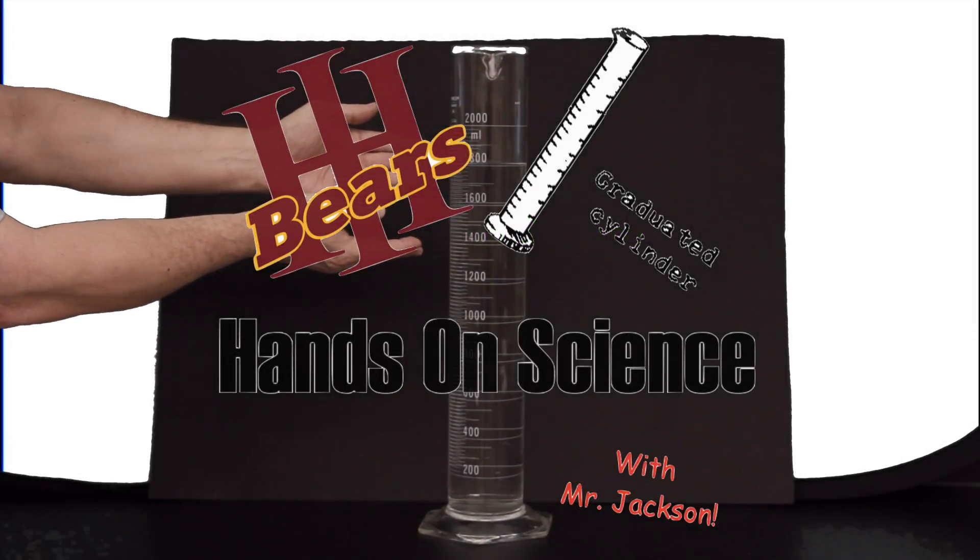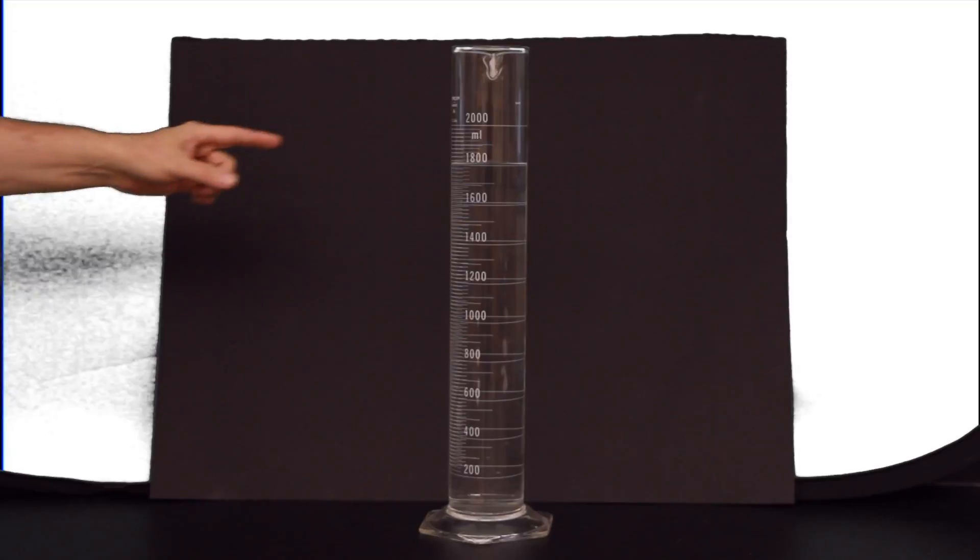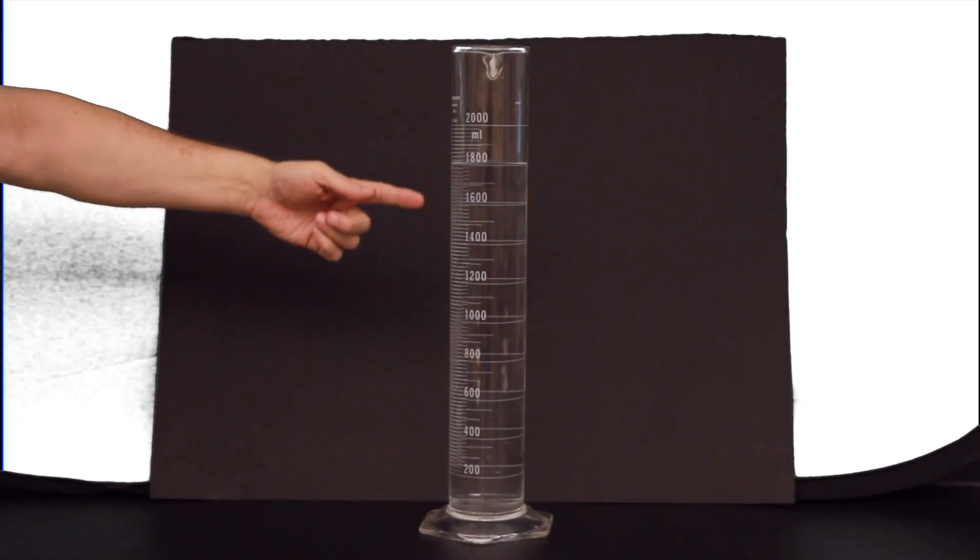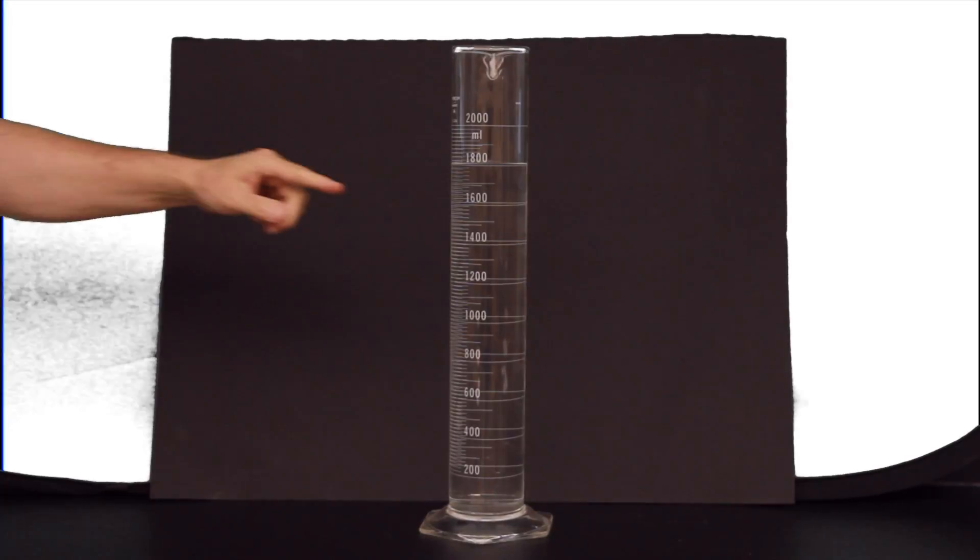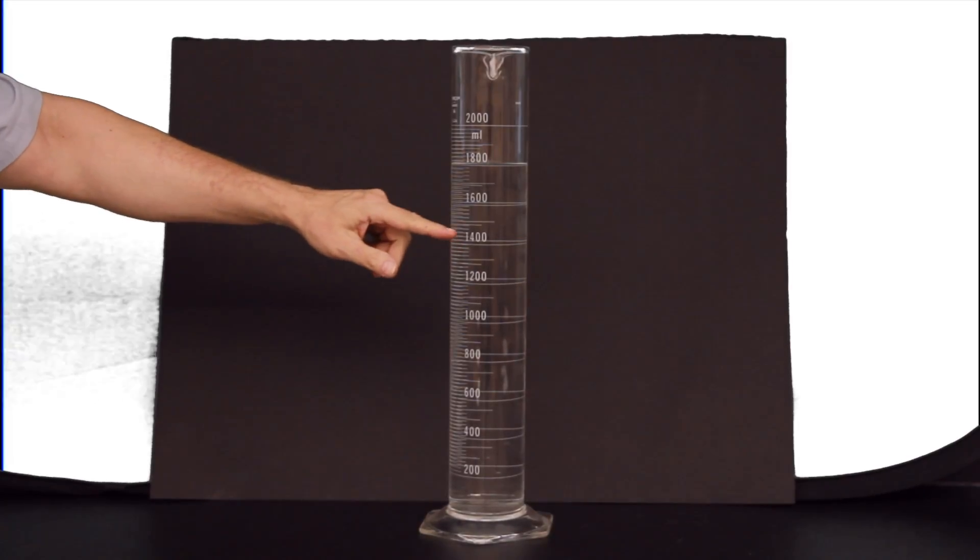Hands-on the graduated cylinder. The graduated cylinder is one of the most common pieces of lab equipment used to measure liquid volume. It gets its name from the measuring lines, called graduations, found along the side of it.